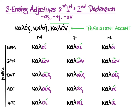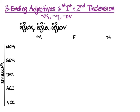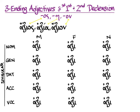Now let's see what this looks like with another adjective. Axios, axia, axion means worthy. You see how it has the three endings of the nominative — masculine, feminine, and neuter. The masculine looks just like we expect in the second declension: os. But because the stem of this word ends in iota, it has a long alpha instead of an eta in the feminine. And then back to the on that we expect in the neuter. Here are all the masculine endings: os, oo, o, on, e.